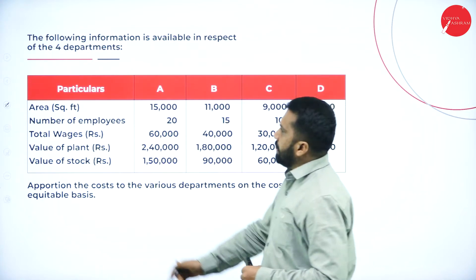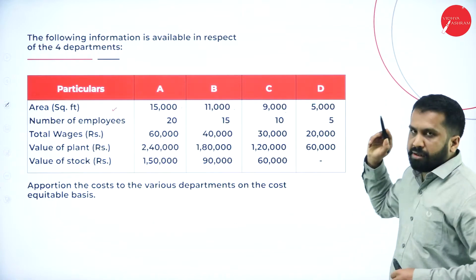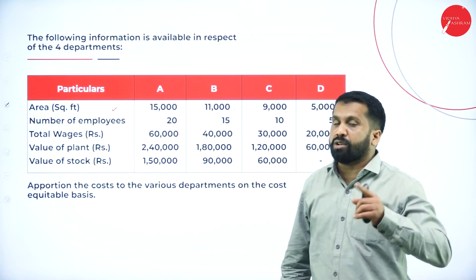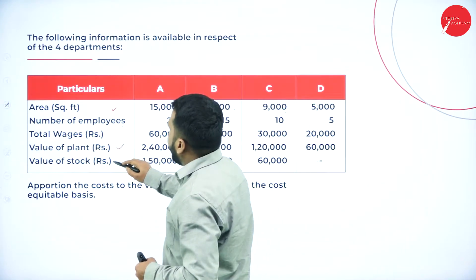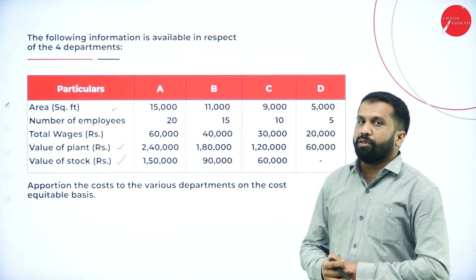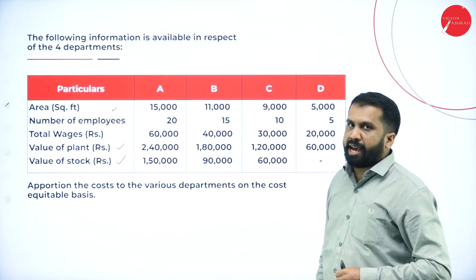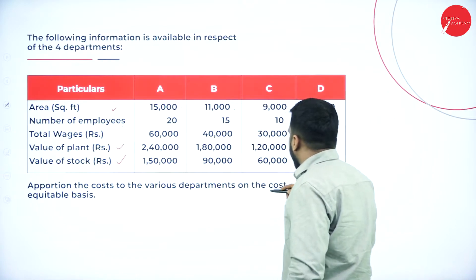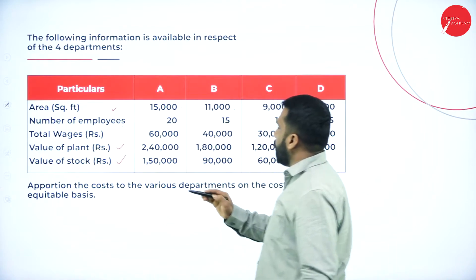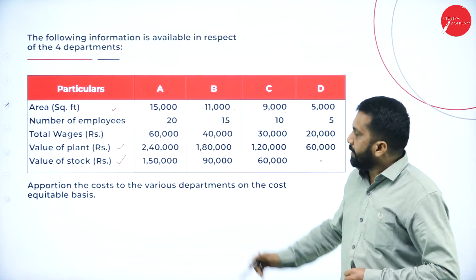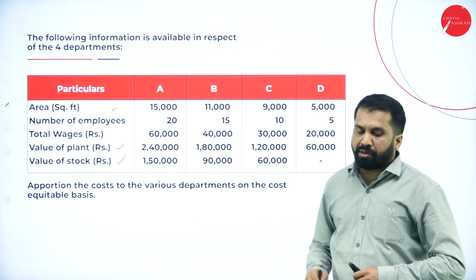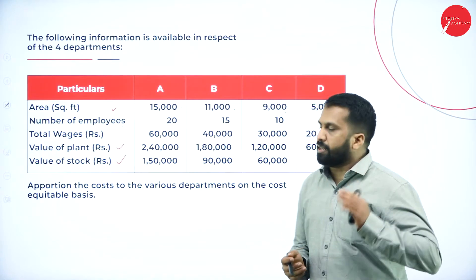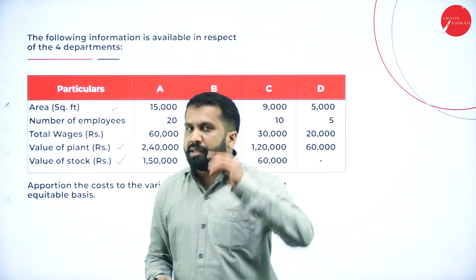These are the information we have: area used by A, B, C, D; number of employees; total wages; employee insurance; value of plant; and value of stock. All the information and bifurcations are available. We now have to apportion the cost to the various departments on an equitable basis — for example, rent on the basis of floor area. That is called equitable basis. Before going to the answer, you are supposed to do the working note. Follow the same step — what is a working note? We have all the information; make it simple.